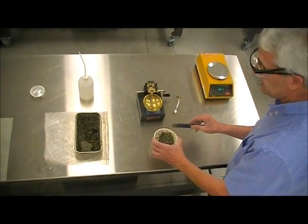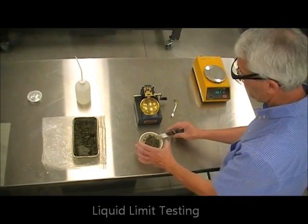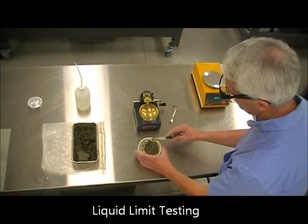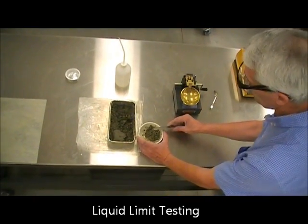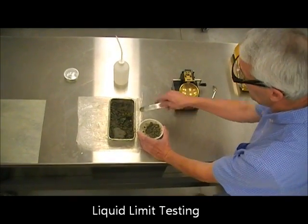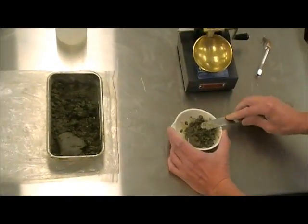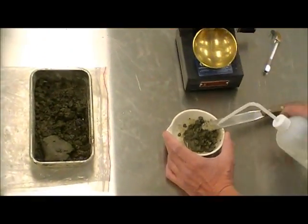Now we're going to proceed with the liquid limit, which is the state of water content that separates liquid from plastic behavior. So to make the soil behave as a liquid, we need to mix it up with a lot of water. We take the material like we were working before and we add water to it.